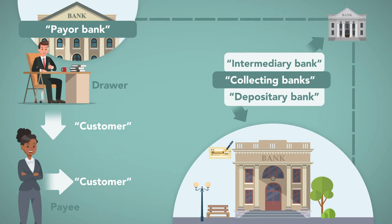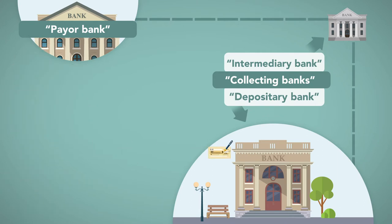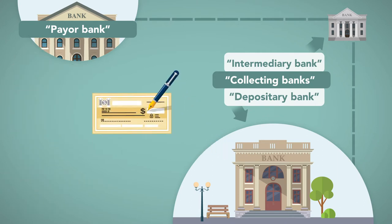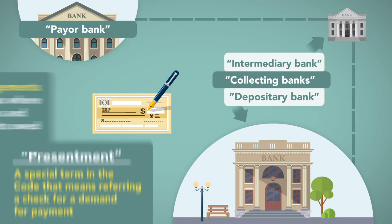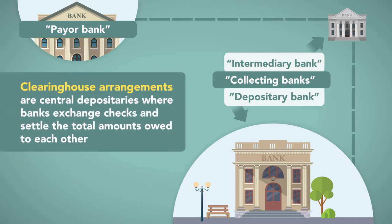The customer of the depository bank deposits her check into her account there, and the bank then seeks payment from the payer bank by presenting the check. 'Presentment' is a special term in the code that means referring a check for a demand for payment. Banks enter into clearinghouse arrangements, which are central depositories where banks exchange checks and settle the total amounts owed to each other.